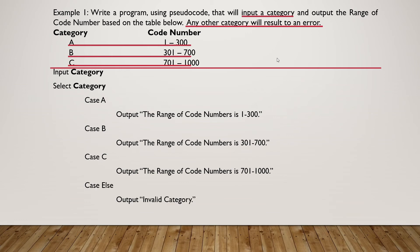In case else, we are going to output invalid Category if our input Category is not equal to A, B or C. And then, given that we don't have anything else to do, we are going to end our Select Case Statement.